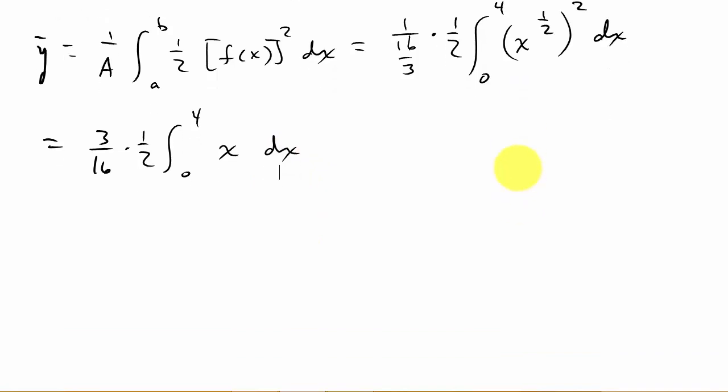And so that will give us, let's see, this is going to be 3 over 32. When I multiply this, and then x, that's going to be x squared, multiply by 1 half, the reciprocal of the exponent, 0, 4. And we're going to evaluate it from 0 to 4. So this gives me 3 over 64 times 4 squared minus 0 squared. And so we end up with 3 fourths.